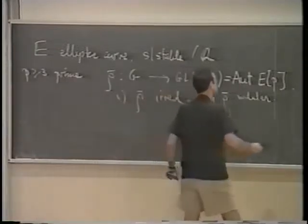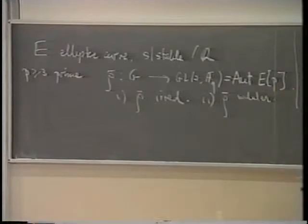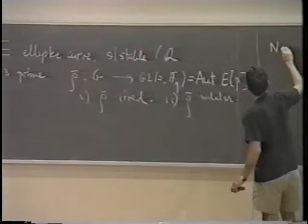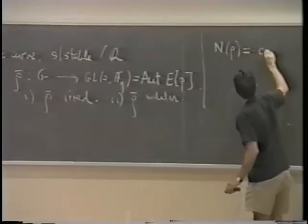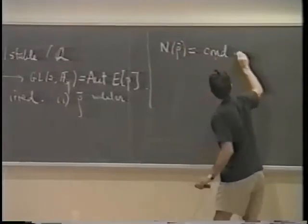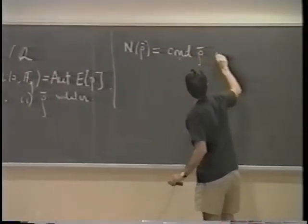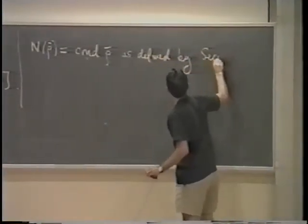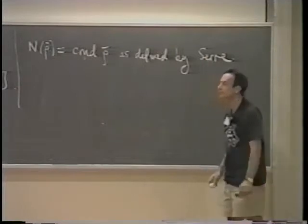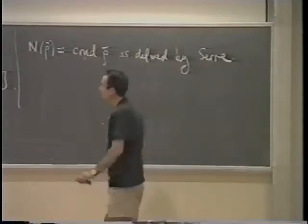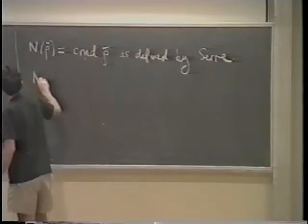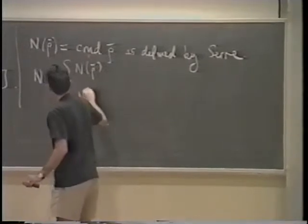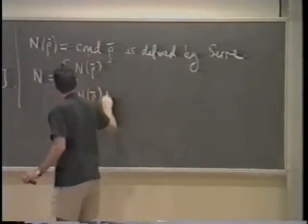The best way to do that is to define some conductor. Let's consider N(ρ̄), the conductor of ρ̄ as defined by Dick Gross in his lectures — meaning the Artin conductor defined by Serre. An integer N can then be defined as either N(ρ̄) itself, or the product of N(ρ̄) with p, according as something does or does not happen.